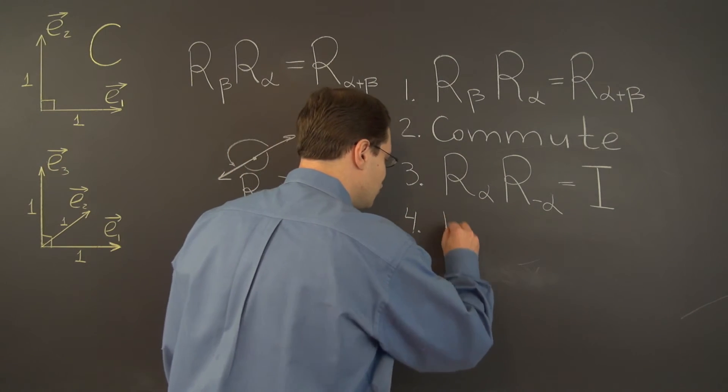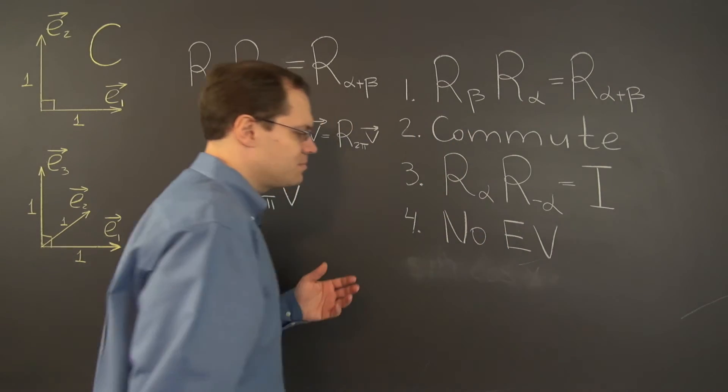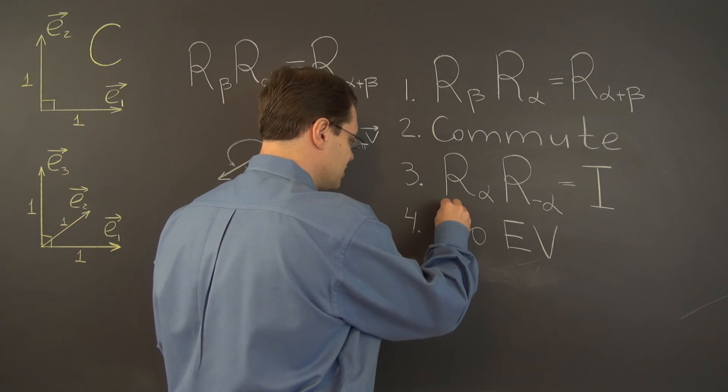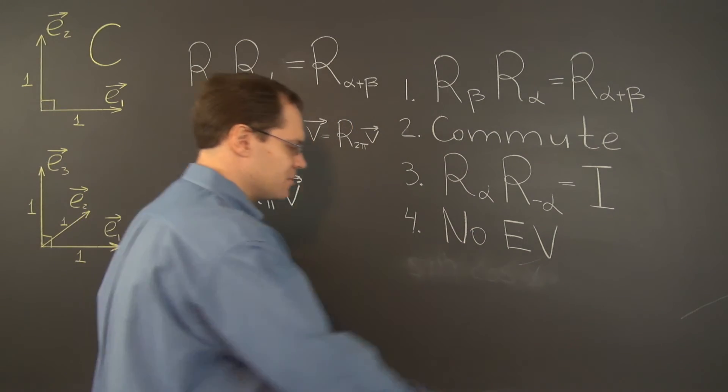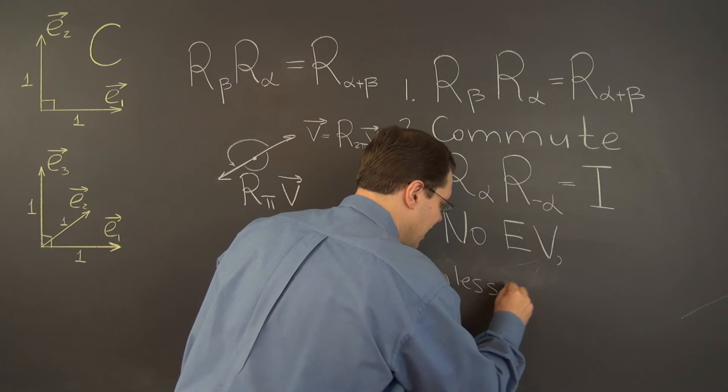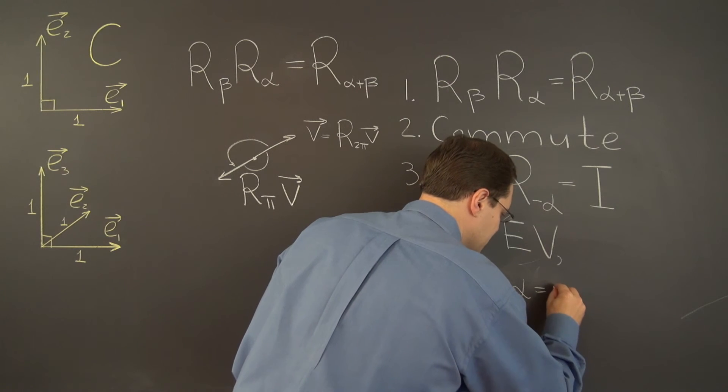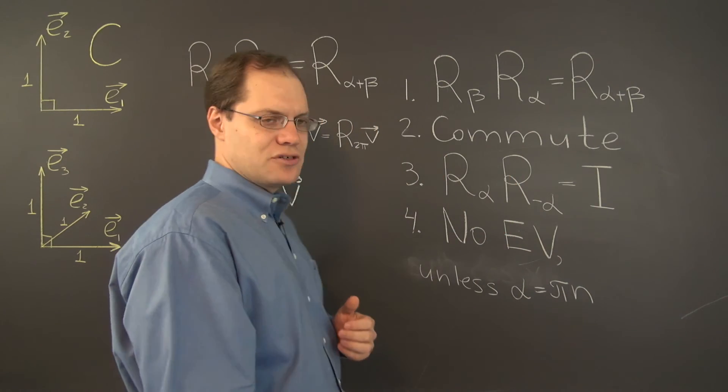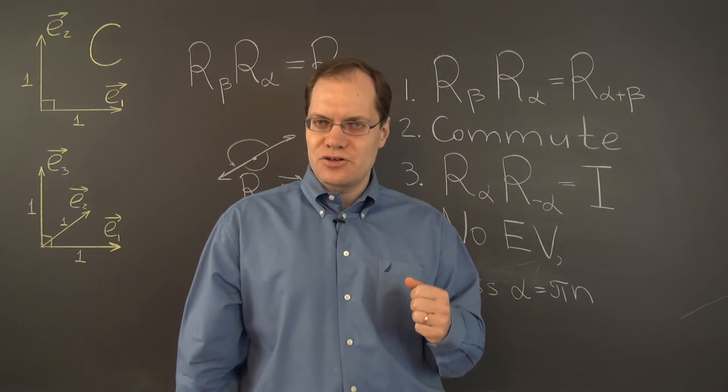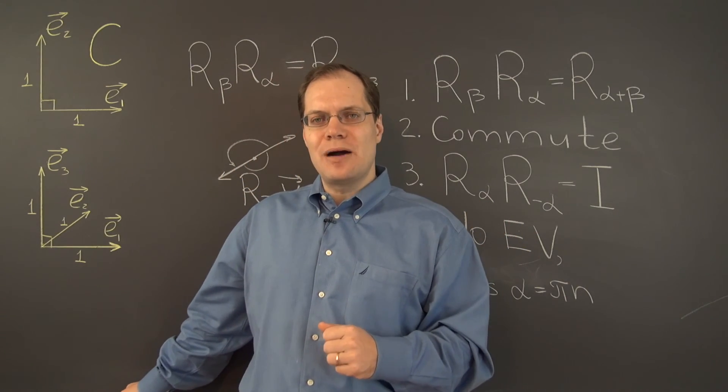Otherwise, there are no eigenvalues, because no vector is a multiple of its preimage, of what it started out as. No image is a multiple of its preimage. So just to make it accurate, I'll write, unless alpha equals pi n, where n is an integer. So unless alpha is a multiple integer of pi, as we just discussed, there are no eigenvalues. That's the last property.